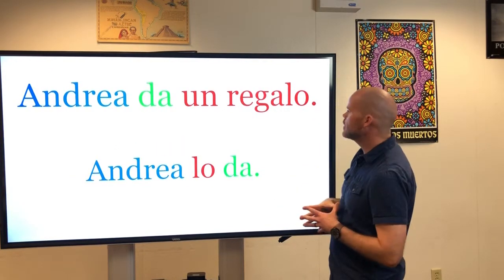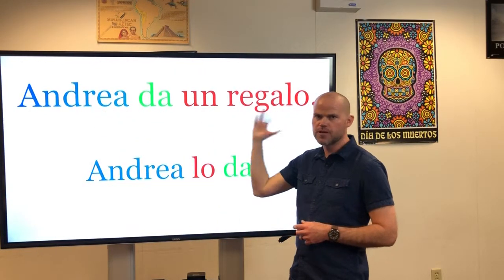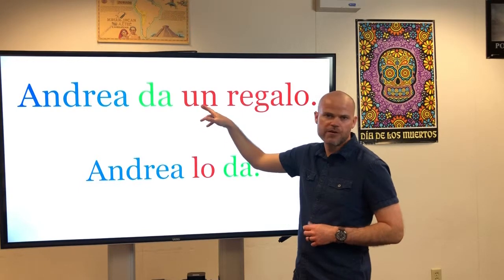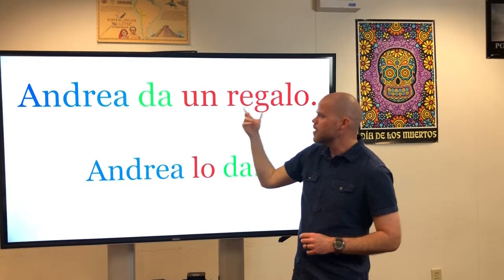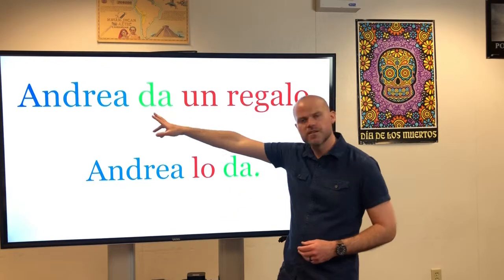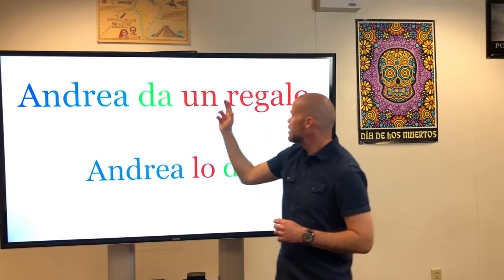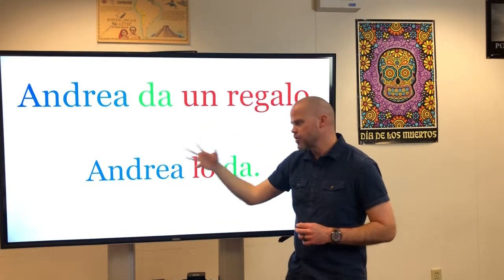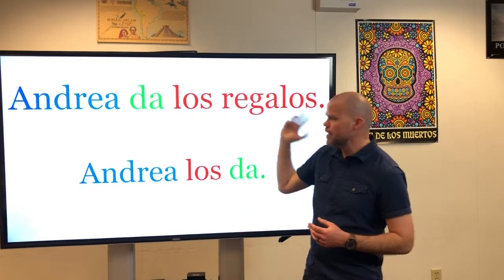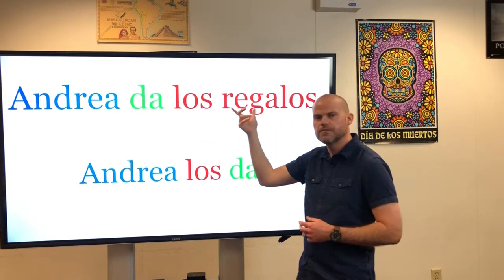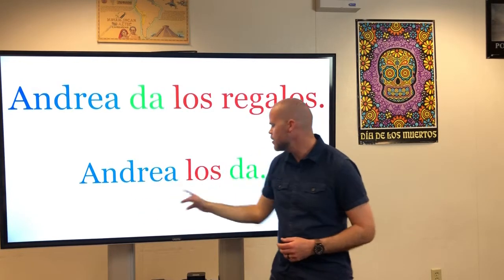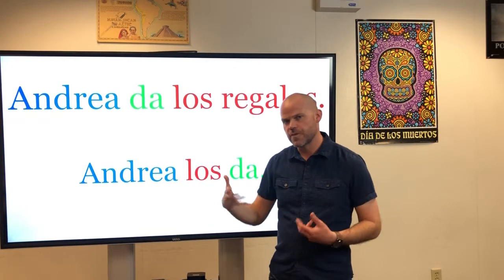Andrea da un regalo — Andrea gives a gift. The direct object un regalo is masculine and singular, so we use lo. It doesn't matter whether it's el regalo or un regalo — the direct object itself is masculine and singular. With only one verb, the pronoun goes before it: Andrea lo da — Andrea gives it. If we make it plural: Andrea da los regalos — Andrea gives the gifts. The direct object is now plural and masculine, so: Andrea los da — Andrea gives them.